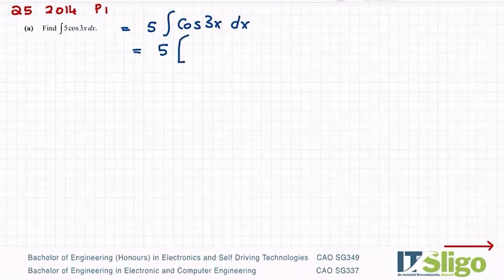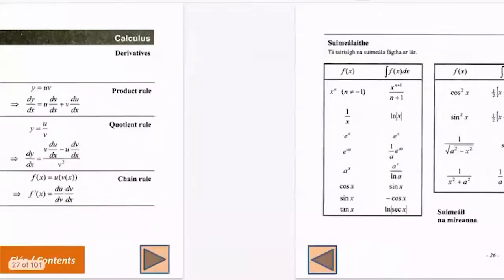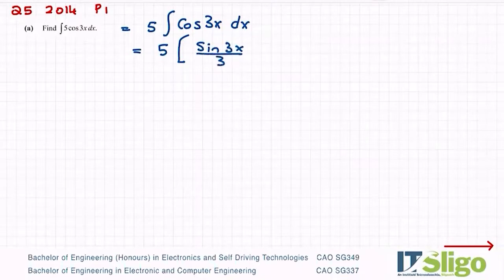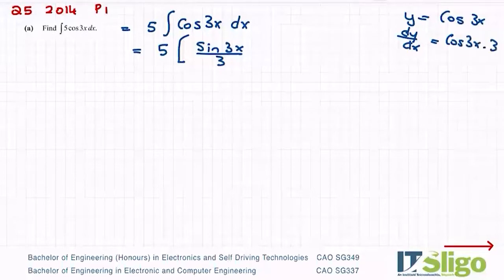So then to integrate it, cos 3x and we know from here cos goes to sine. So cos 3x will go to sine 3x, but you'll divide by 3. If you remember when we are integrating, this would be our letter a, we would do cos 3x by 3. We'd multiply it by that letter a. In integration it's the opposite, so we divide by that letter a. And you can always check your answer.